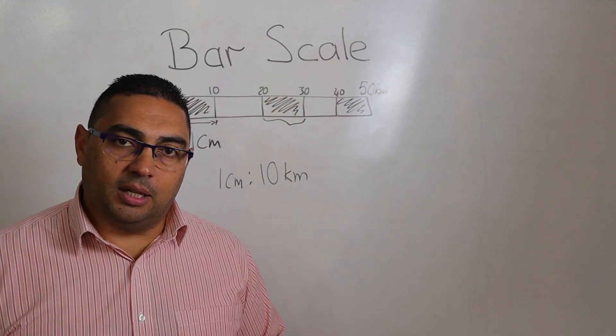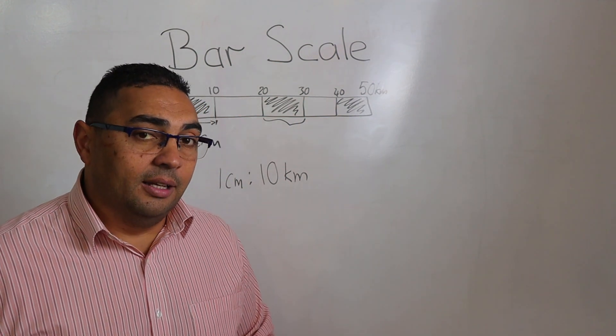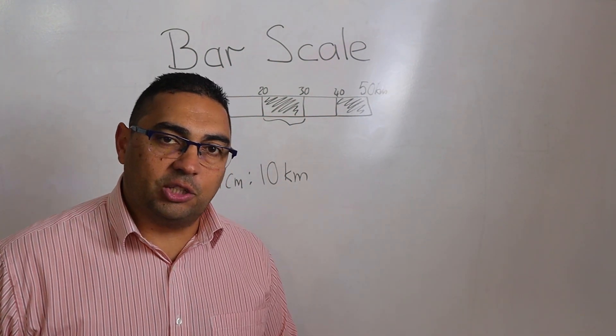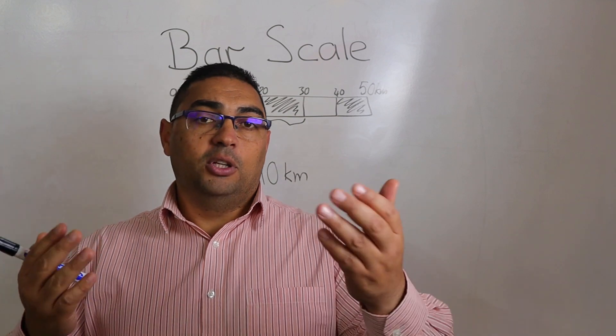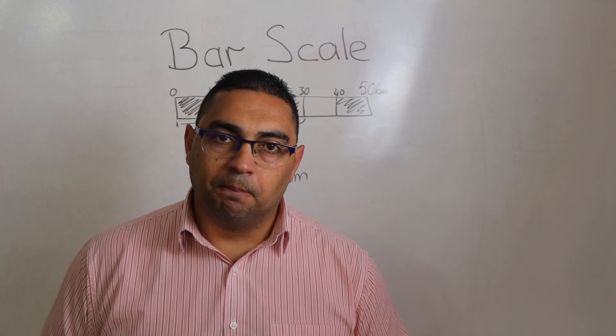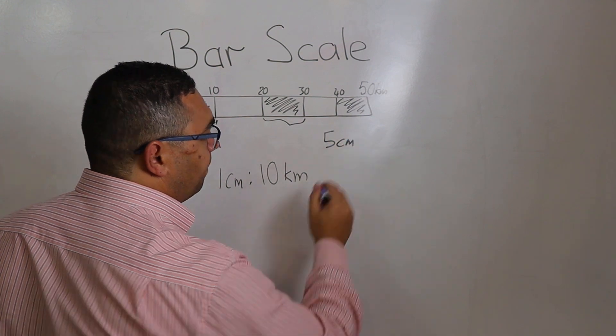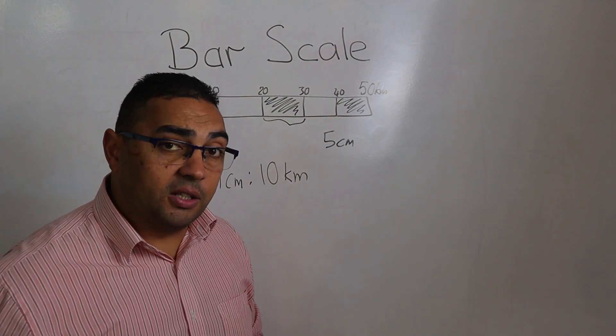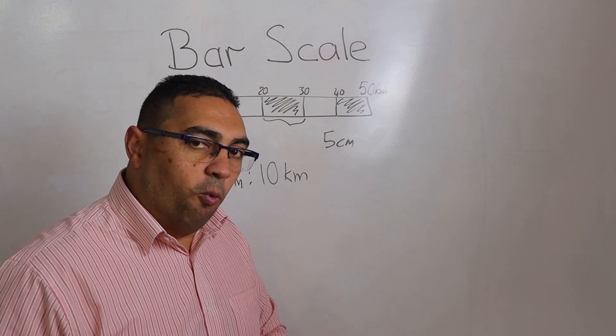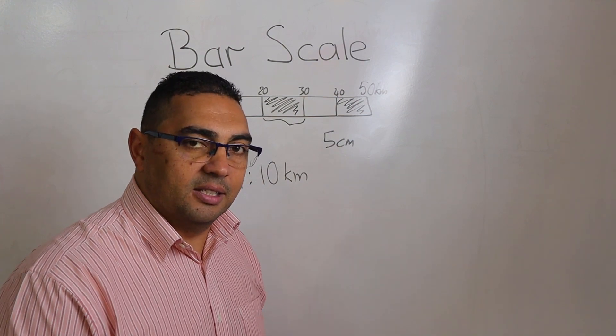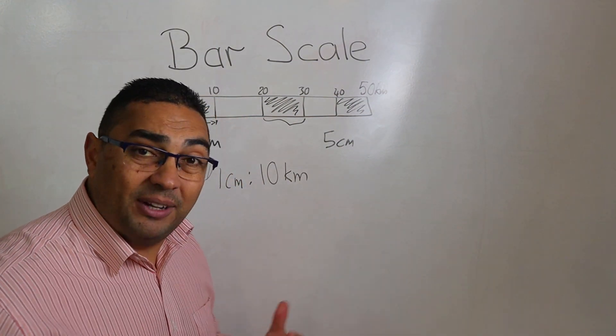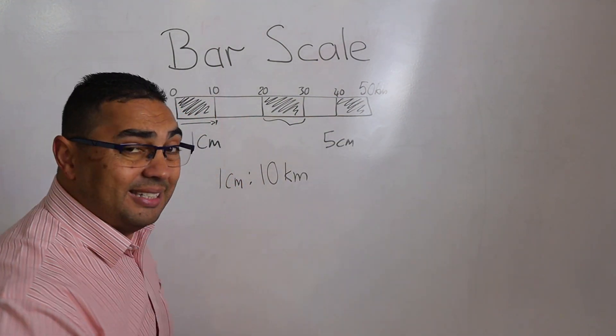Now they say to us, okay, now that you've got that, let's actually work out what that actual distance would be if you are given a particular map measurement. So let's use a map measurement of 5 centimeters. And they ask you, well, with a map measurement of 5 centimeters, what would the actual distance be?